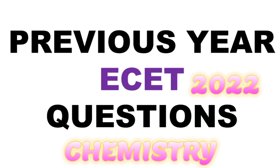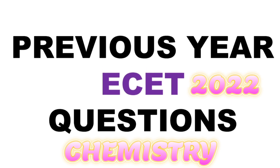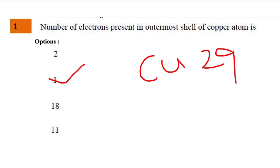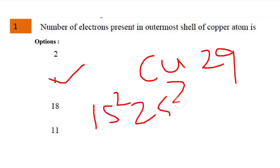Hello everyone, today we will discuss previous year easy questions of chemistry. The first question is: number of electrons present in the outermost shell of a copper atom? The options were 2, 1, 18, and 11. The answer is 1, because copper contains 29 electrons. By electronic configuration: 1s2 2s2 2p6 ... 4s1 3d10. The s orbital has one valence electron, so the answer is 1.